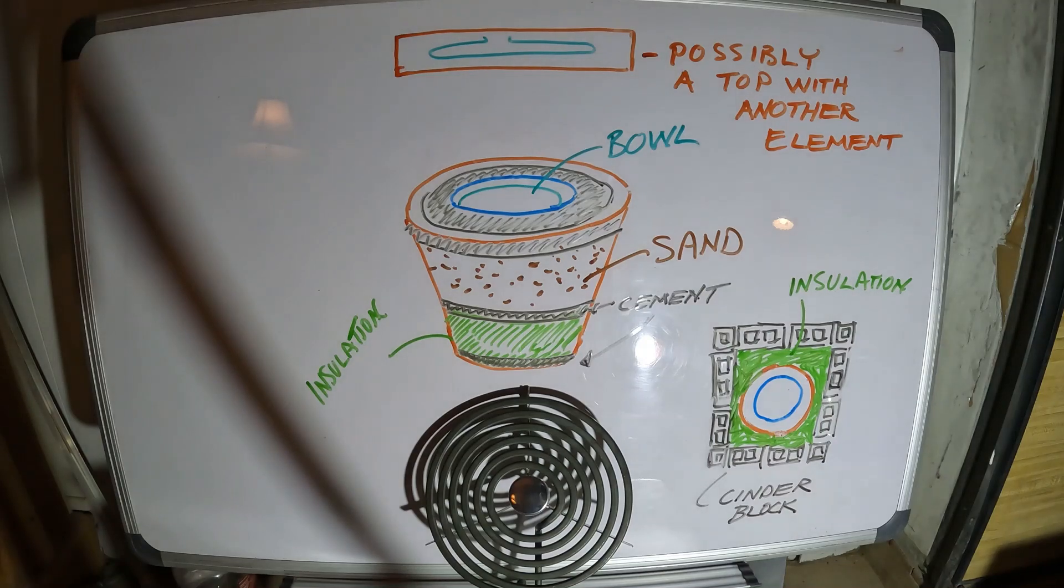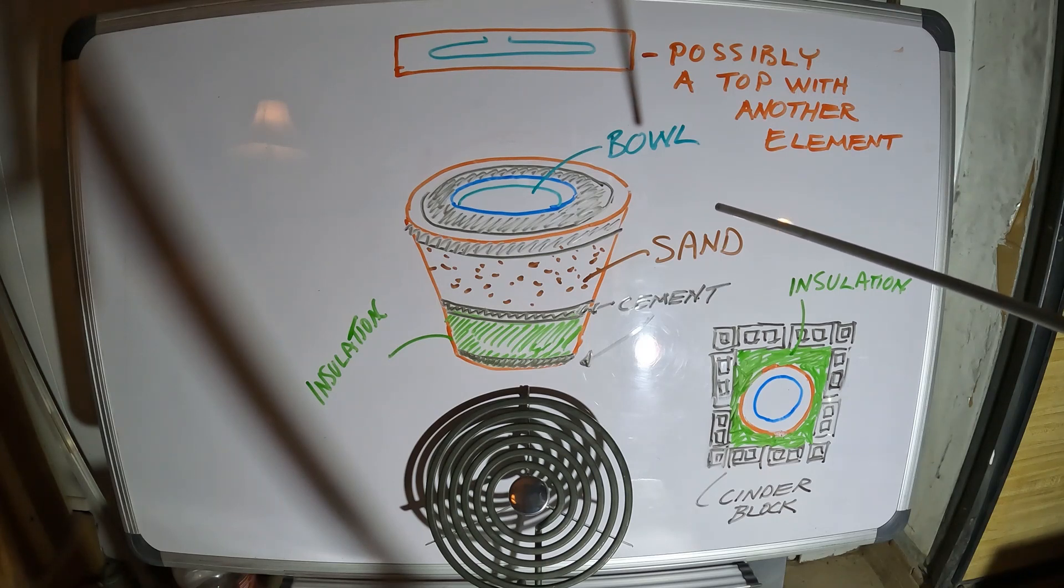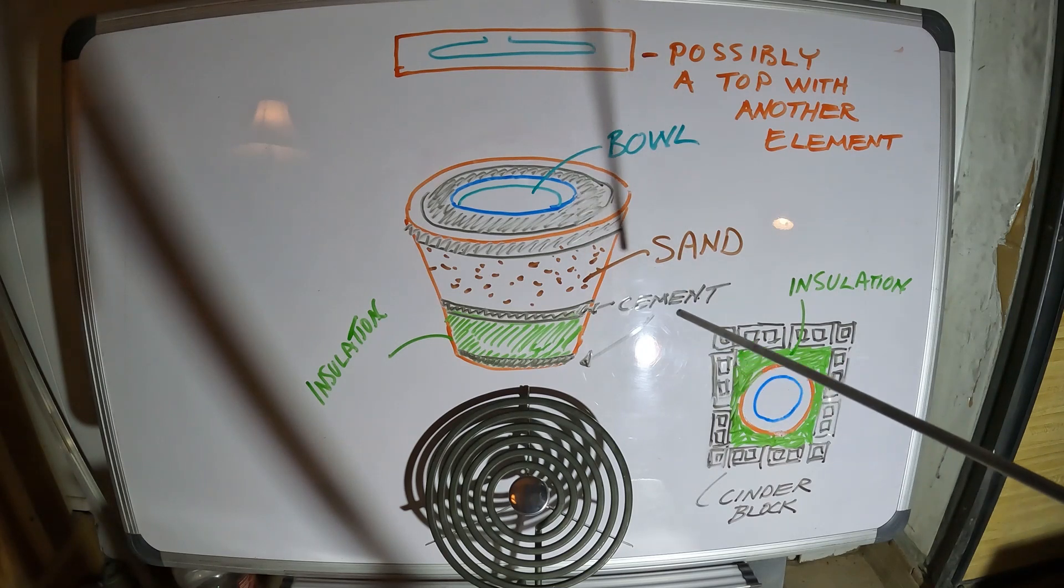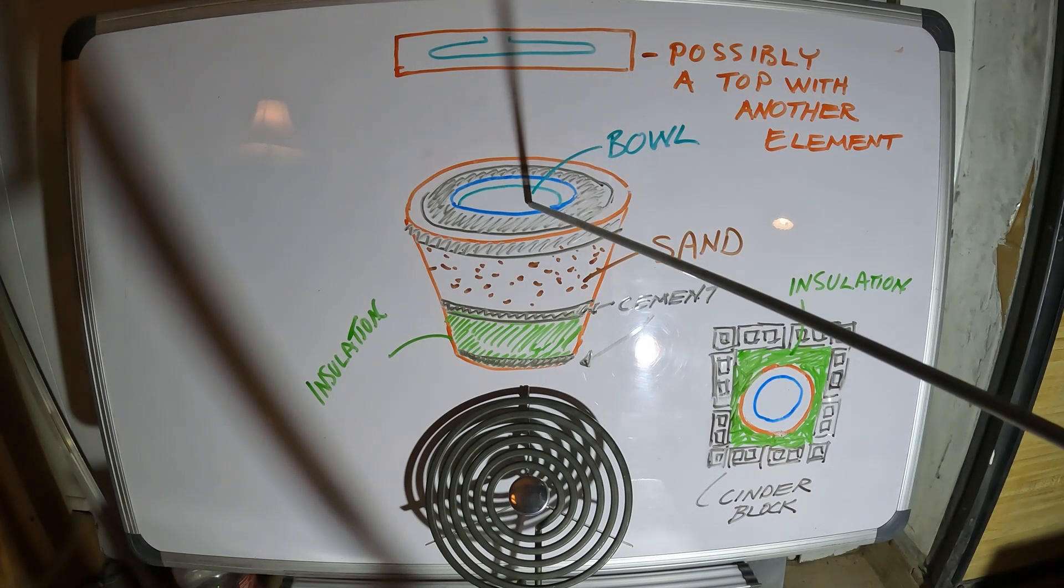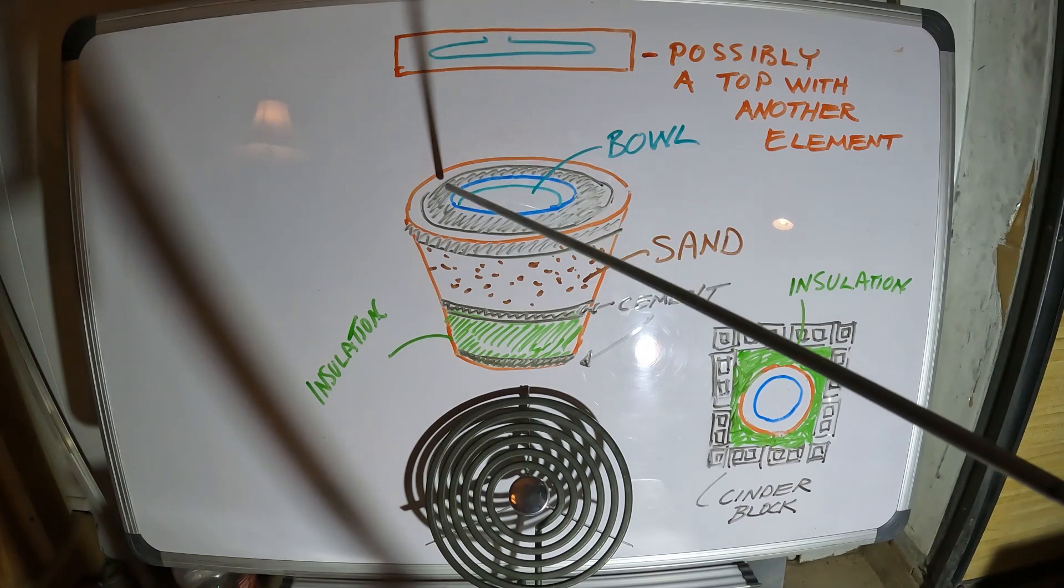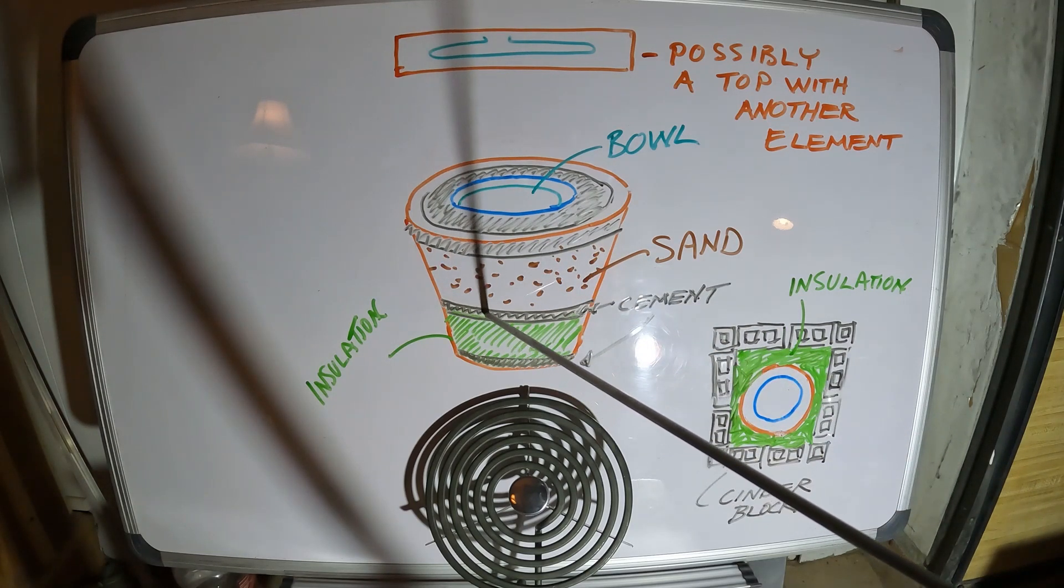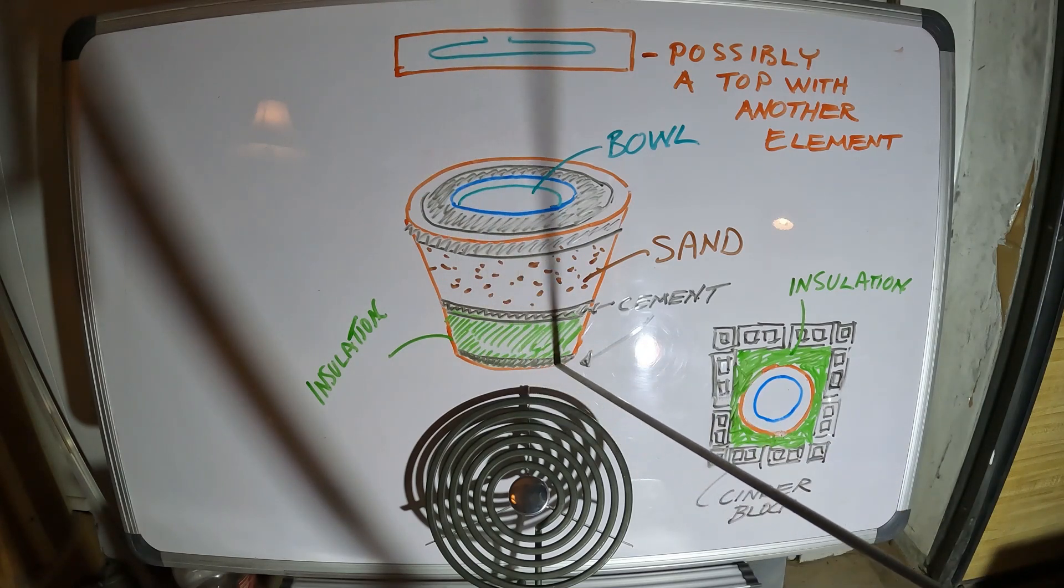Here's a rough diagram of the terracotta Mr. Toasty pizza oven. I'm working on the new version, so there's the bowl I've already got in place with the cement.